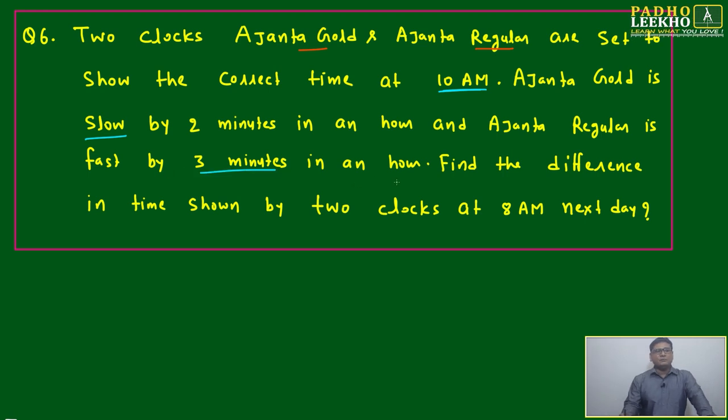Find the difference in time shown by two clocks at 8 AM next day. This is a type 5 comparison of two clocks - one is slow, one is fast. In one hour, the gap will be 2 plus 3, which is 5 minutes.